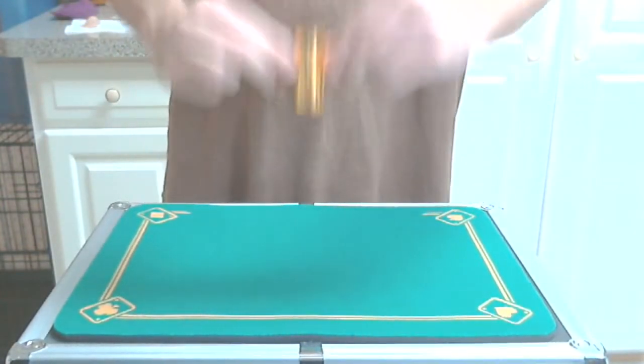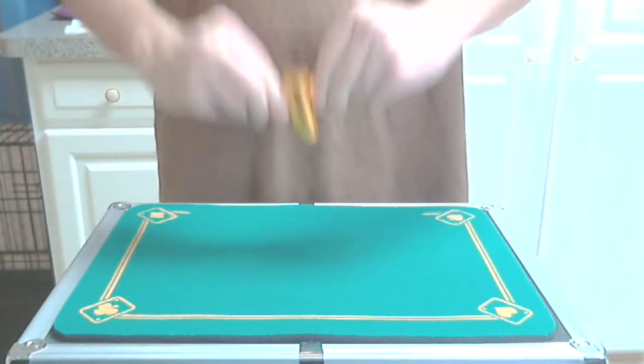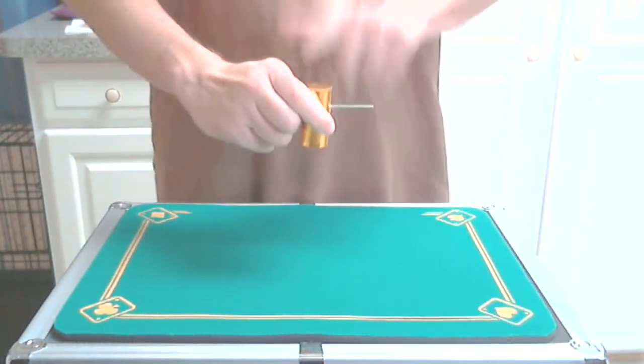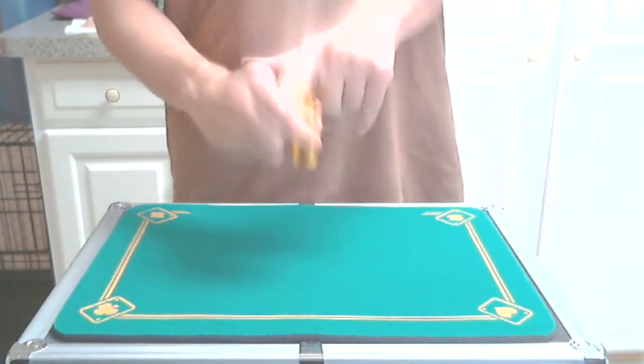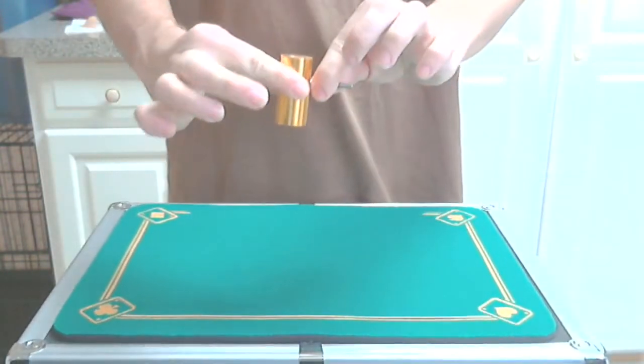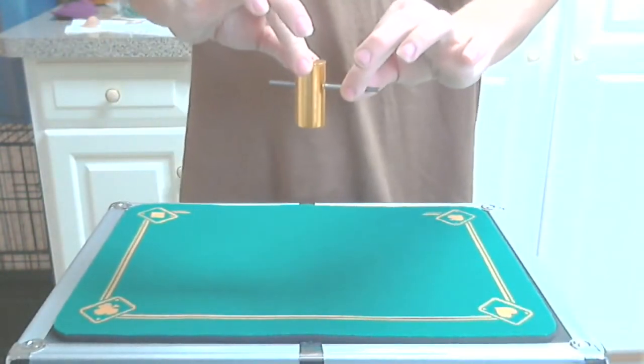I'll push the rod through. So now the smaller cylinder, notice it's trapped. There's no way to get it out. Can't get the smaller one out. The only way to do that is to take the rod and just push it straight through and let the smaller one fall.